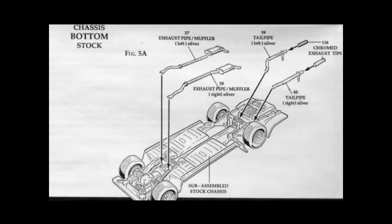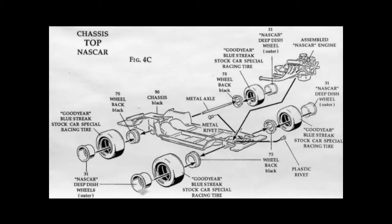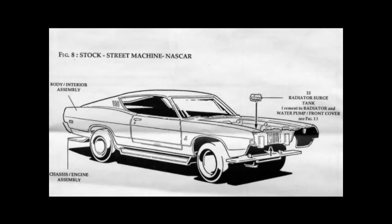Your choice of factory exhaust pipes or NASCAR exhaust dumps and rear brake cooling ducts were added to the parts list. Goodyear Blue Streak stock car special tires and deep-dish wheels were added to the four corners of the NASCAR racer version. A radiator surge tank with upper radiator hose was also added to the factory stock engine.